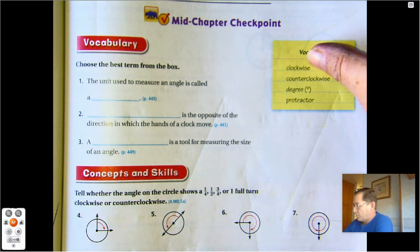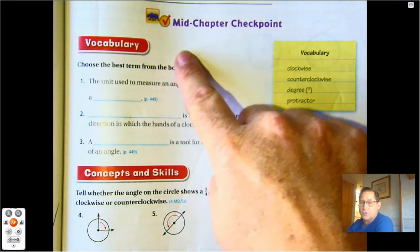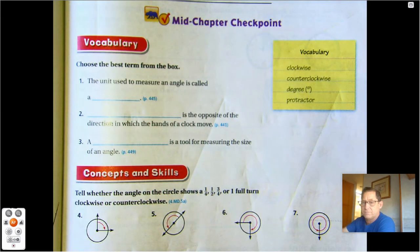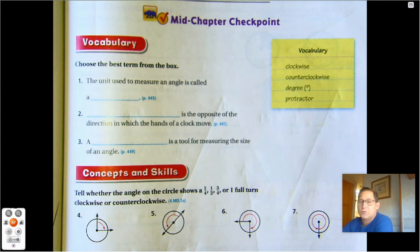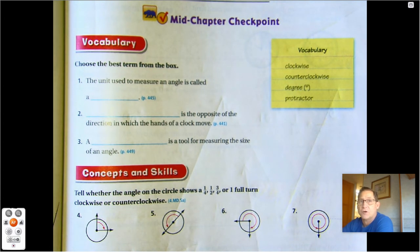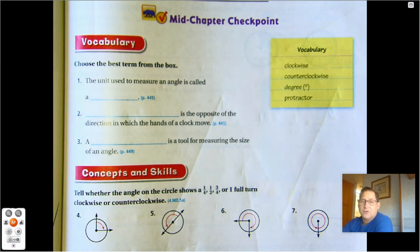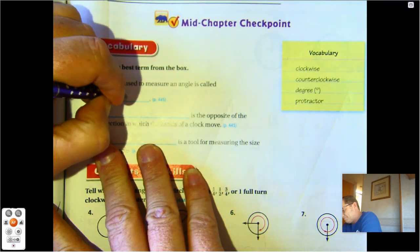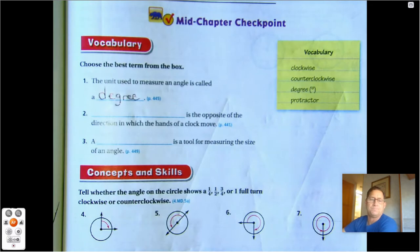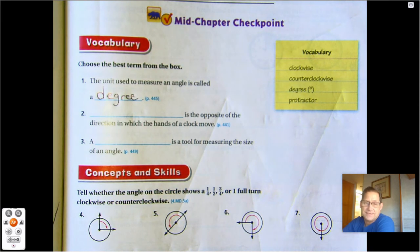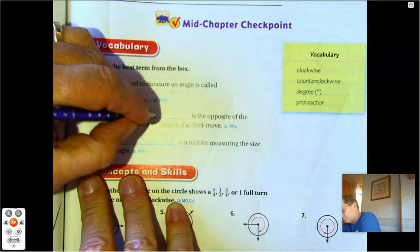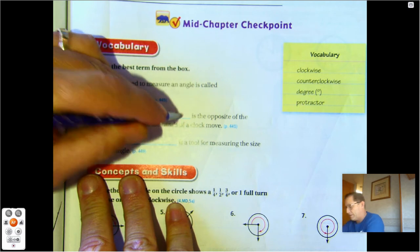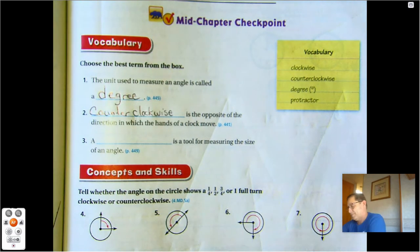Clockwise means it's going the way the hands on a clock go. Counterclockwise is the opposite way of the hands on a clock. Degree is how we measure angles. A protractor is a tool that we use to measure angles and to draw them. So a unit used to measure an angle is called a degree. Counterclockwise is the opposite of the direction in which the hands of a clock move. And a protractor is a tool for measuring the size of an angle.